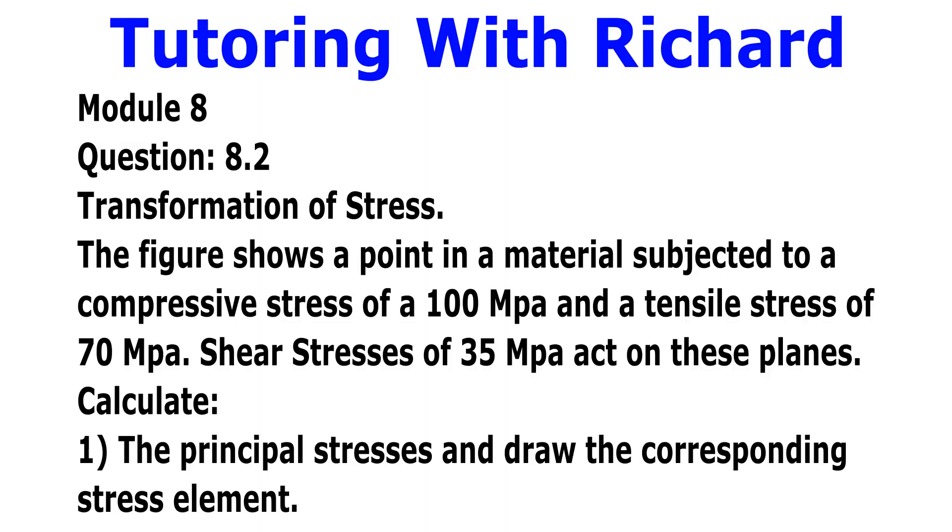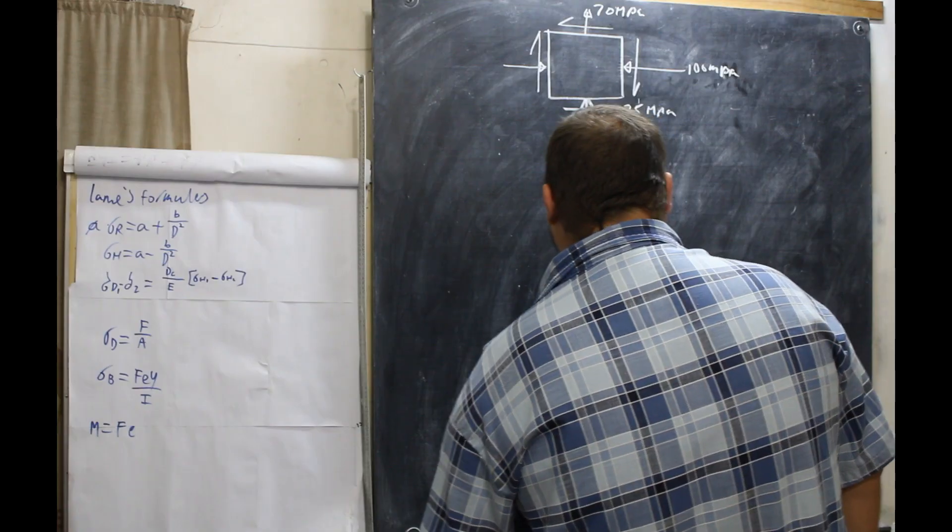Our question goes, in the figure as shown on the board, a point in a material subjected to a compressive stress of 100 megapascals, a tensile stress of 70 megapascals, and the shear stresses of 35 megapascals that act on these planes. Calculate the principal stresses and draw the corresponding stress element.